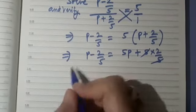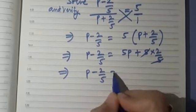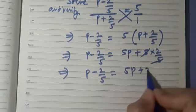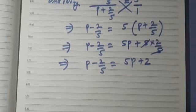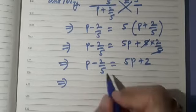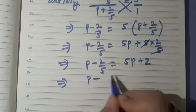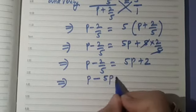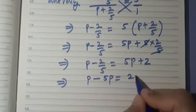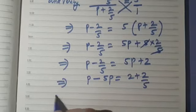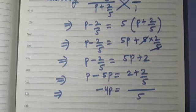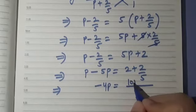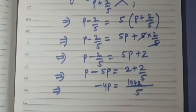Simplifying, we have p minus 2/5 is equal to 5p plus 2. We take variables to one side and constant terms to the other side, so p minus 5p is equal to 2 plus 2/5. This implies minus 4p is equal to, taking 5 as LCM, we get 10 plus 2 in the numerator.